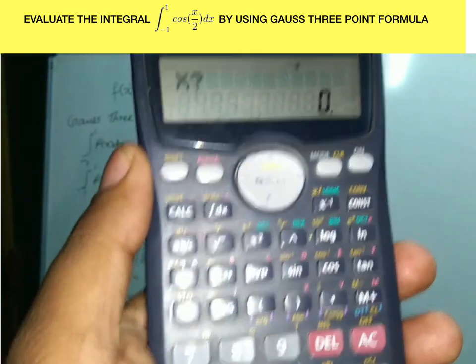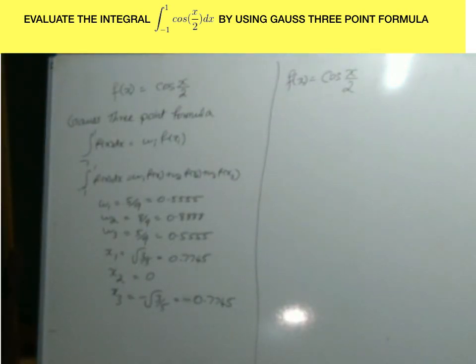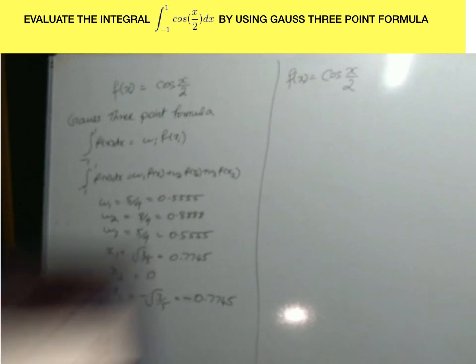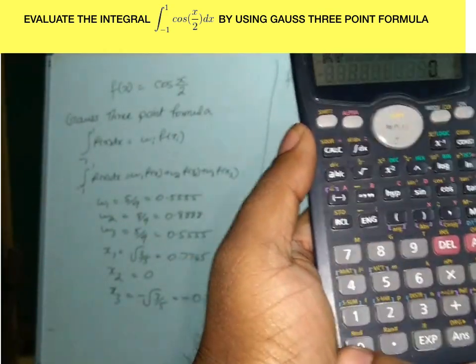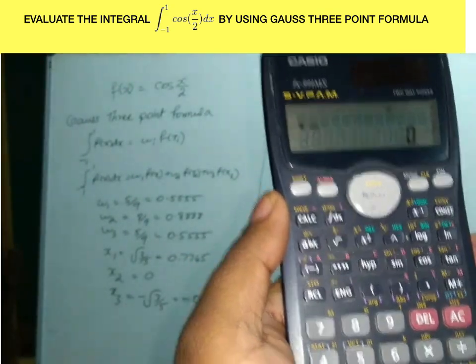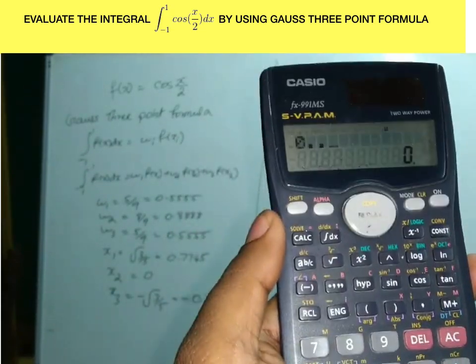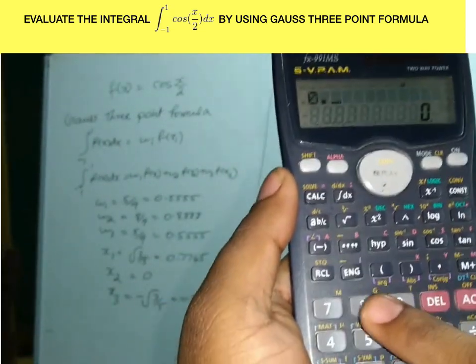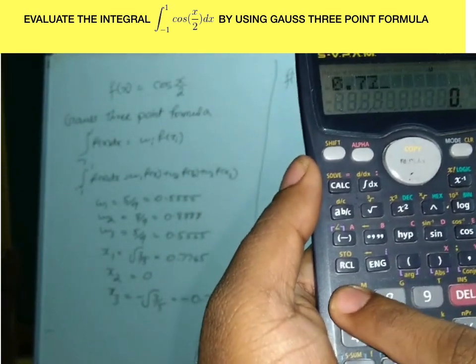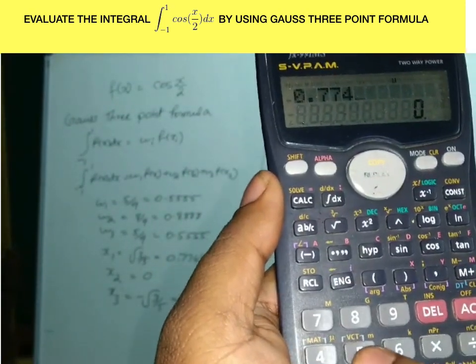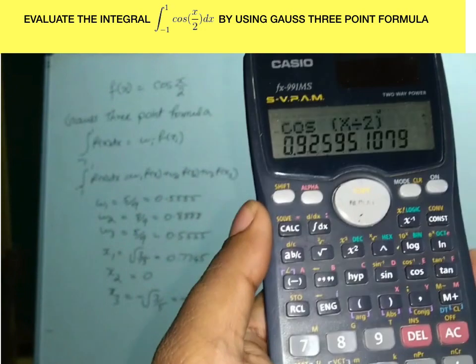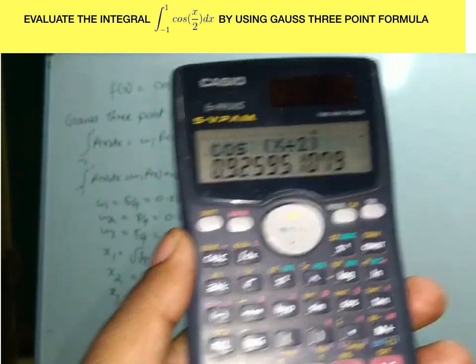x equals, now the first one is x equals 0.7745. Therefore, press x equals 0.7745. Then the answer will become 0.9259.